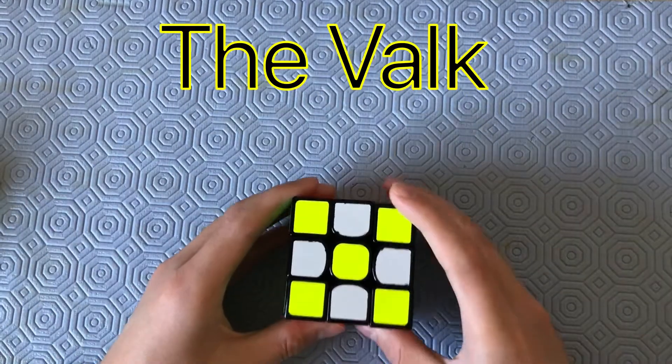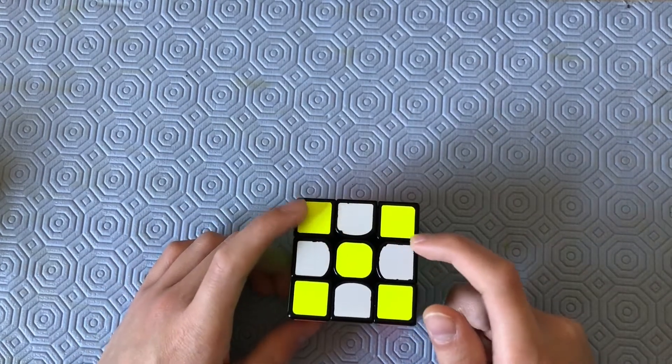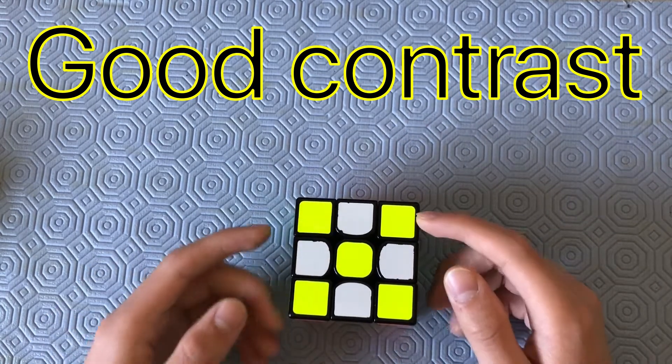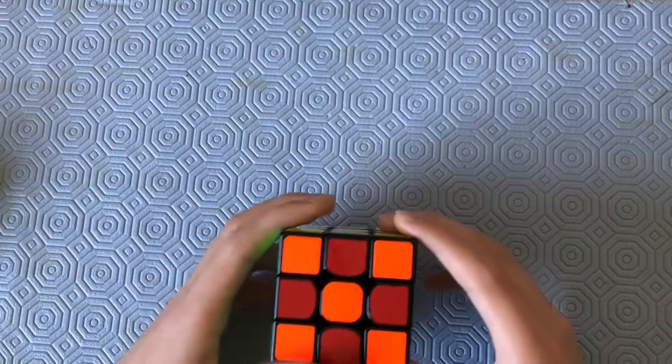Now, with the Valk, you can see that since the yellow is super bright, it contrasts well with the white. If it was just a little bit darker, I would have just given that side to the little magic.